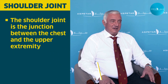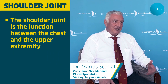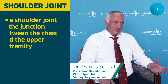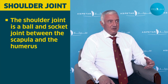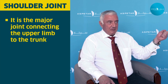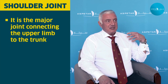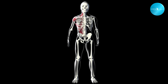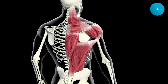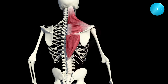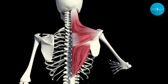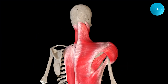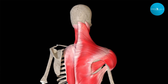The shoulder joint, as the old anatomists described, is a part that connects the trunk to the upper limb. So the shoulder joint is the basis of the arm. It's a part that is very complex, that ensures strength, orientation, mobility and stability for the upper limb.